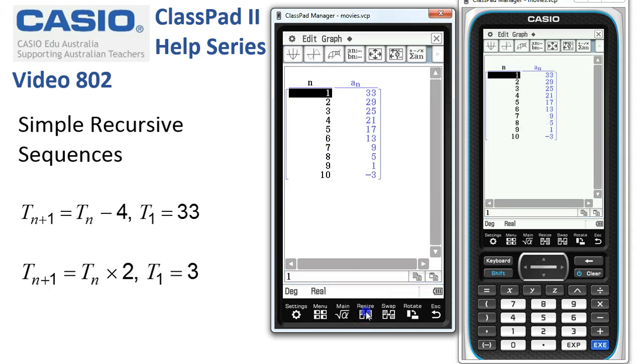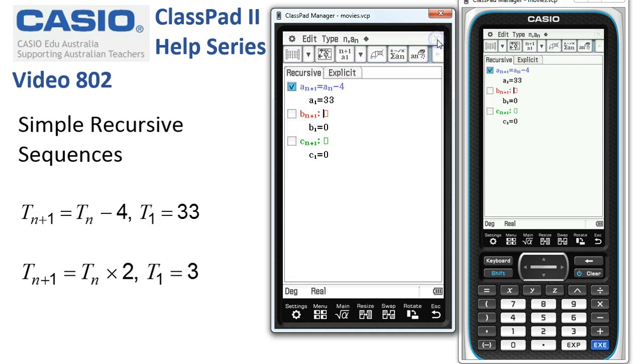If we tap resize at the bottom of the screen we can see the first ten terms of this sequence ending in negative three there. So one done. Let's close the window with the cross at the top and that brings us back to the editor.